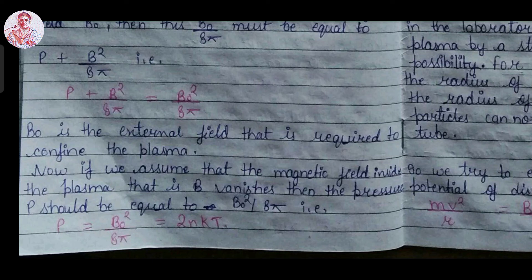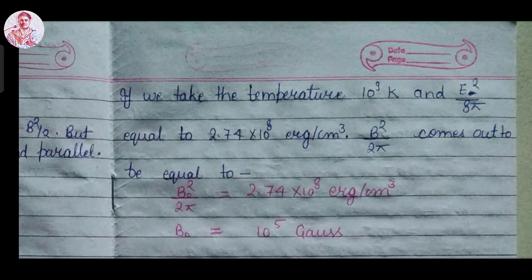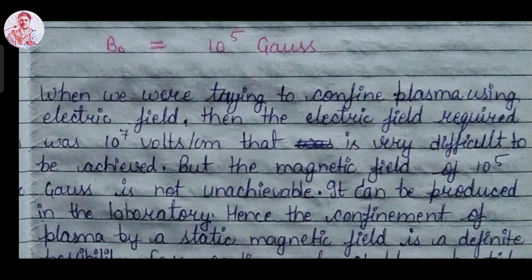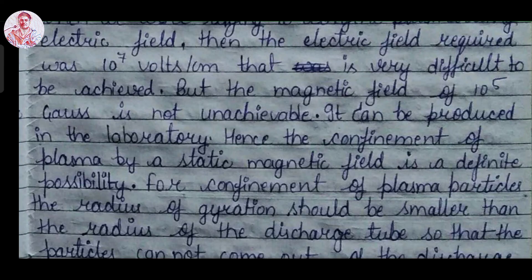Taking the temperature as 10 to the power 9 Kelvin and E squared over 8 pi equal to 2.74 into 10 to the power 8 erg per centimeter cube, then B squared over 2 pi equals 2.74 into 10 to the power 8 erg per centimeter cube, giving B approximately 10 to the power 5 Gauss. This concludes that when trying to confine plasma using electric field, the required electric field is about 10 to the power 7 volts per centimeter, which is very difficult to achieve. But the required magnetic field is about 10 to the power 5 Gauss, which can be easily produced in a laboratory.